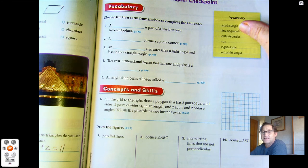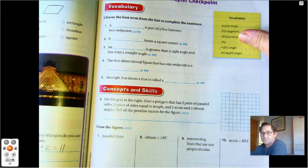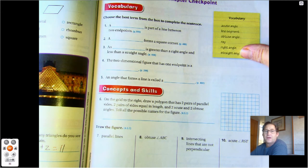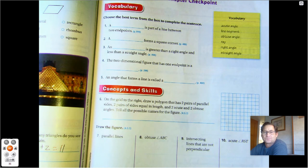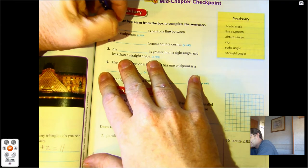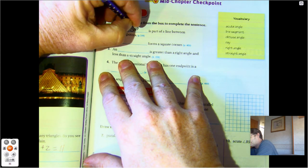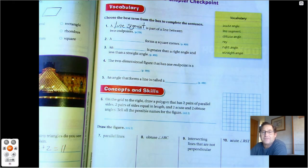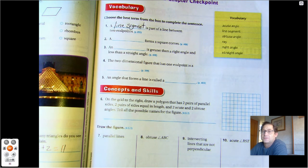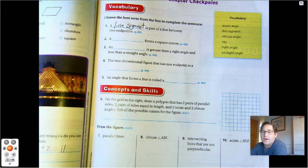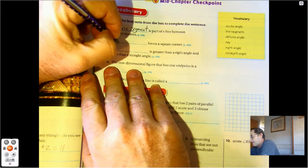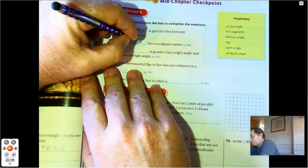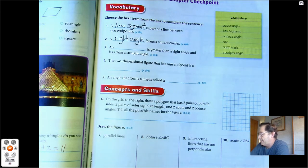A blank is part of a line between two endpoints—that would be a line segment. A blank forms a square corner. What type of angle forms a square corner? A right angle.